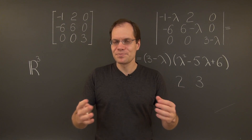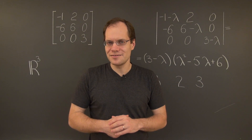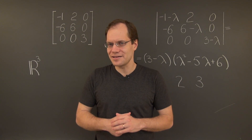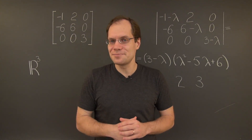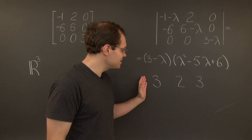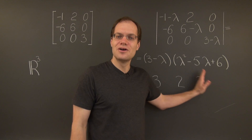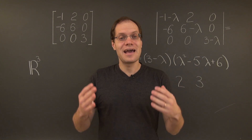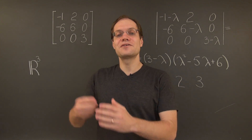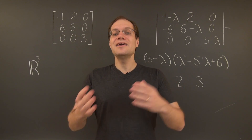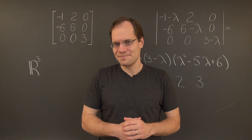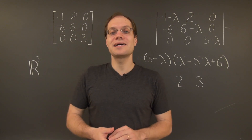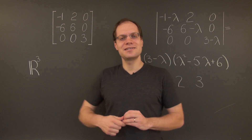To recap: the geometric multiplicity is the dimension of the eigenspace corresponding to the eigenvalue. The algebraic multiplicity is how many times the eigenvalue appears as a root of the characteristic polynomial. The most natural and intriguing question is whether the geometric multiplicity equals the algebraic multiplicity — and that's the question we'll begin addressing next by continuing with this very example.